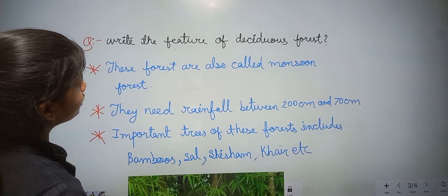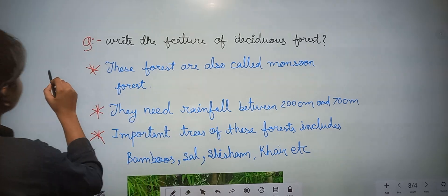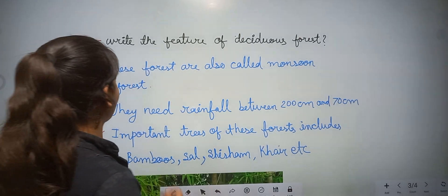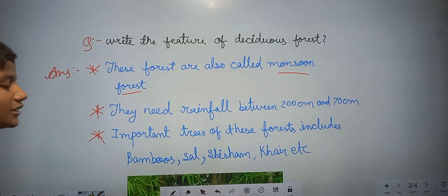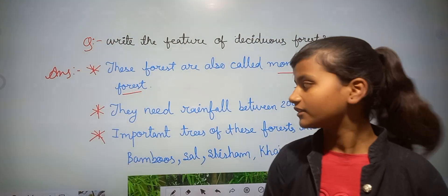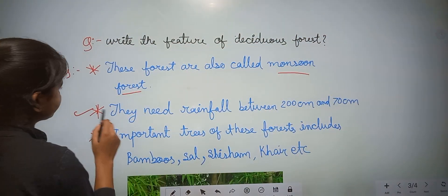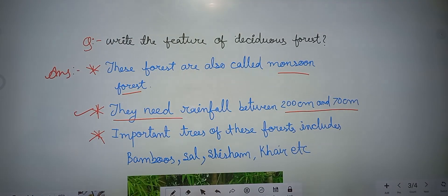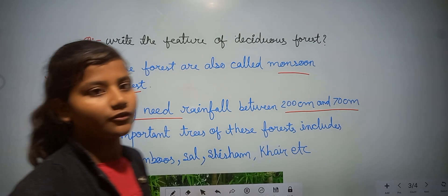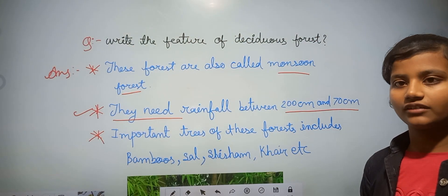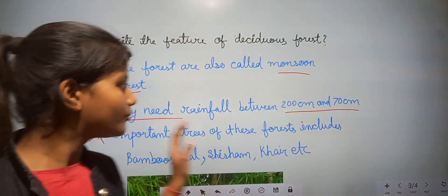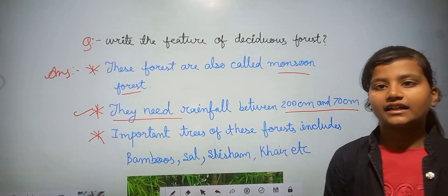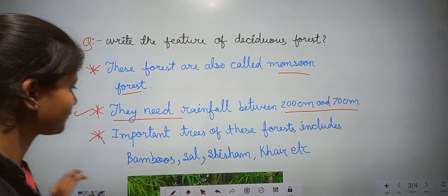Write the features of the deciduous forest. The first point is: these forests are also called monsoon forests. They need rainfall between 70 and 200 centimeters. The evergreen forest receives 200 centimeters or even more of rainfall, but this deciduous forest receives between 70 and 200 centimeters of rainfall.